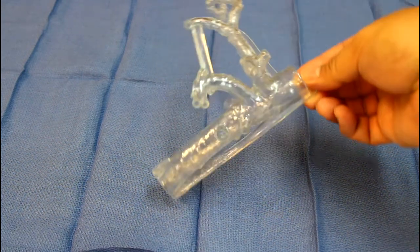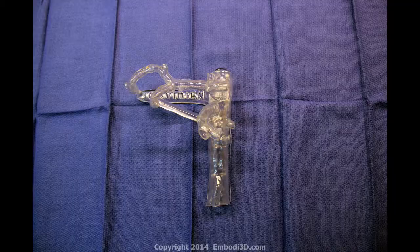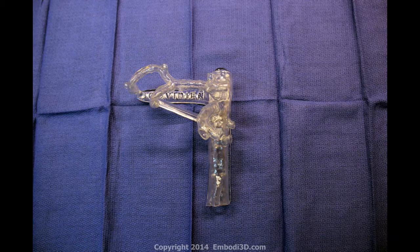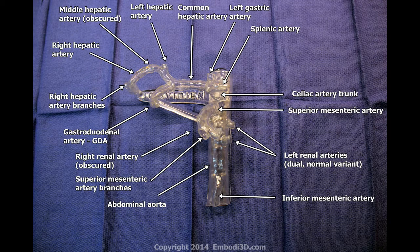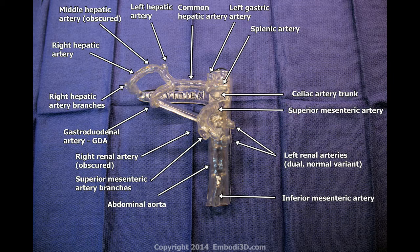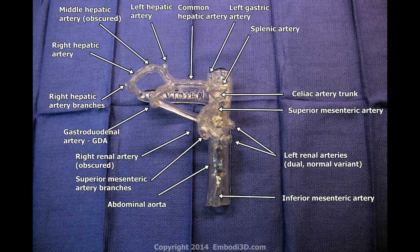The model contains all the major branches of the abdominal aorta. There is particular emphasis on the celiac and hepatic arteries. These vessels are important for endovascular interventions involving the liver, such as chemo embolization and yttrium-90 radio embolization, and upper GI tract, such as embolization for upper GI hemorrhage. Five orders of arterial branching are present in the hepatic arteries, which is an exquisite level of vascular detail.